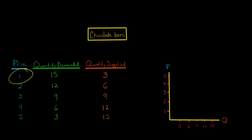So at a price of $1, the quantity demanded is 15. Let's do our demand curve first. So we've got 15 at $1. Now at a price of $2, the amount demanded would be 12.